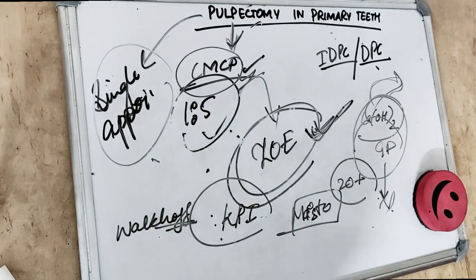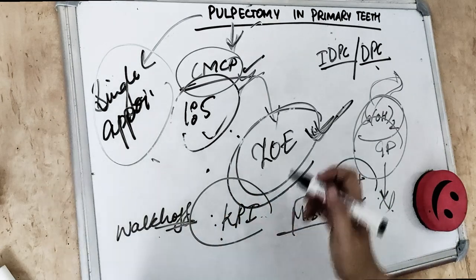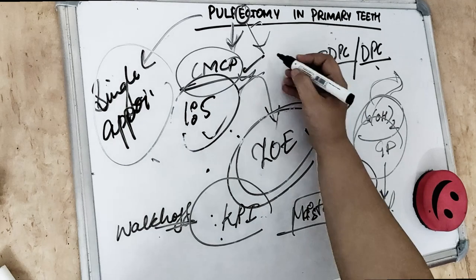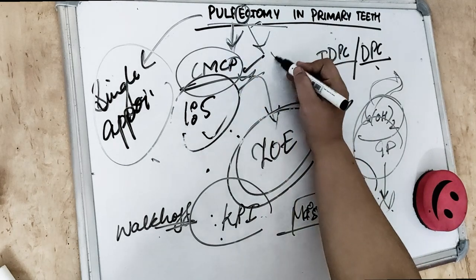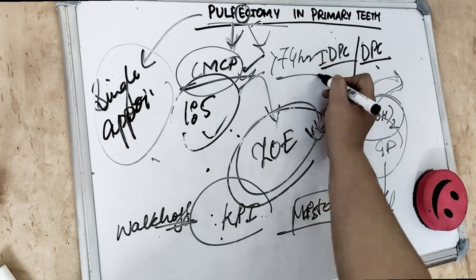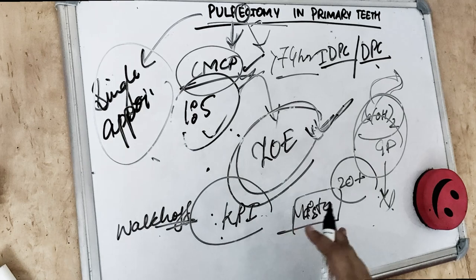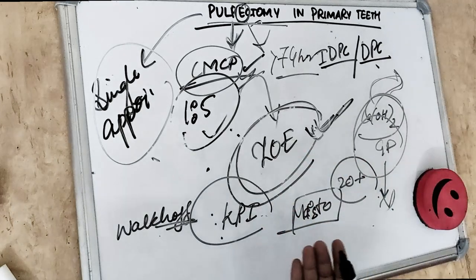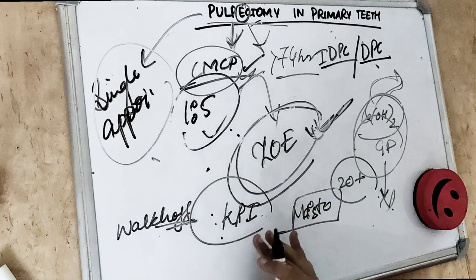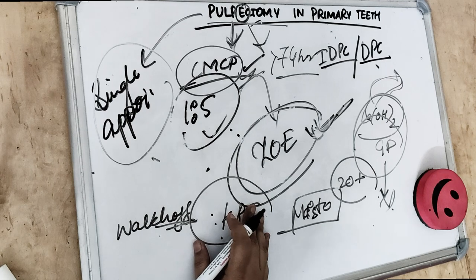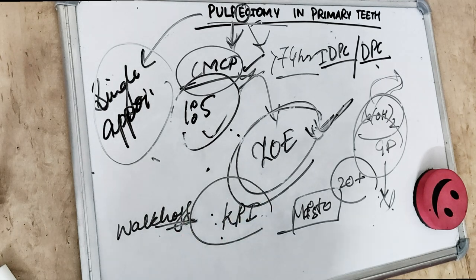This differentiates pulpectomy from pulpotomy. In pulpotomy, we remove only the coronal portion of the pulp and the radicular portion is saved. In pulpectomy — 'ectomy' meaning removal — we remove the whole pulp. We perform this procedure when the injury is more than 74 hours old. Pulpectomy in permanent teeth is known as root canal therapy. If you found this helpful, hit the like button and comment — this helps me help you with your exams, career, and knowledge.